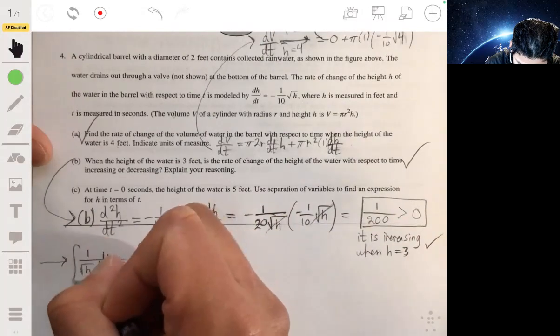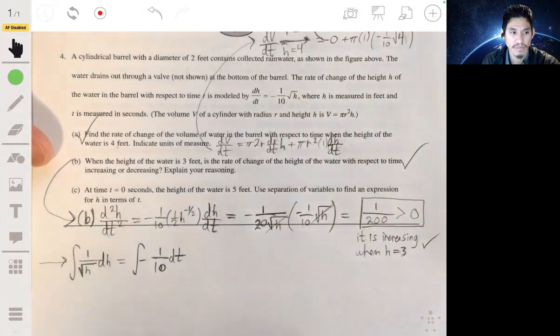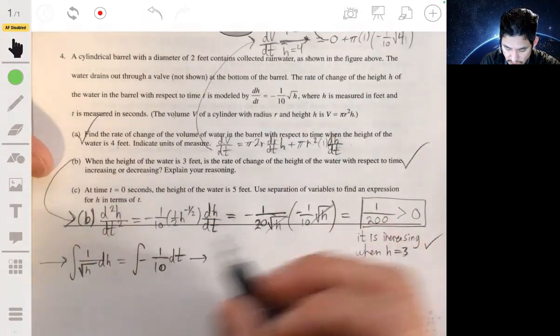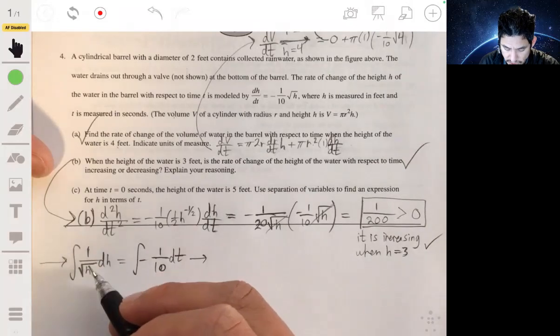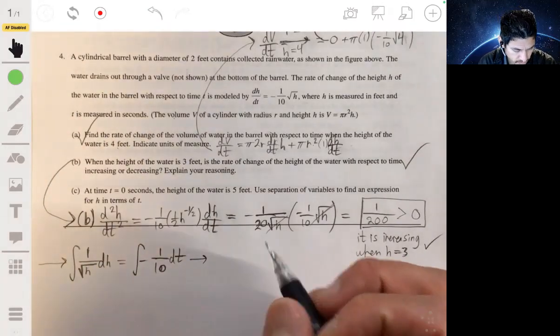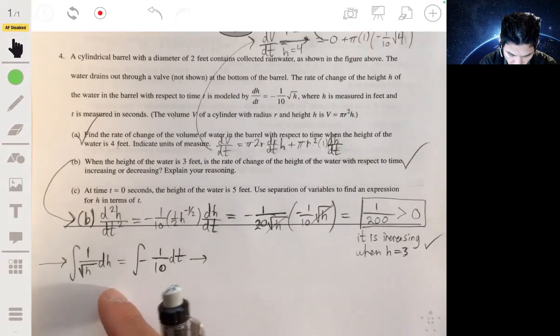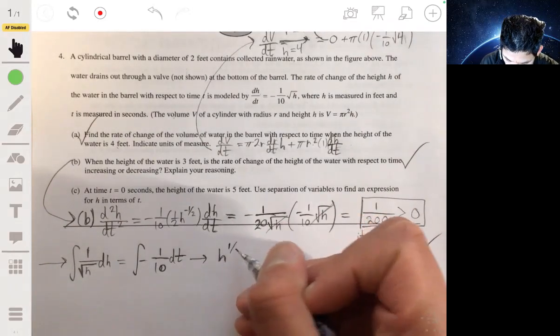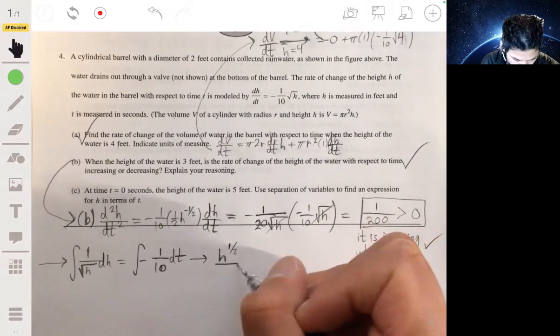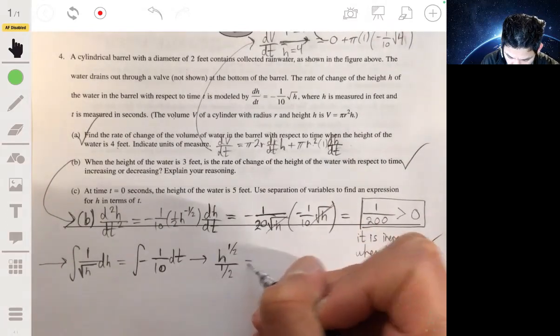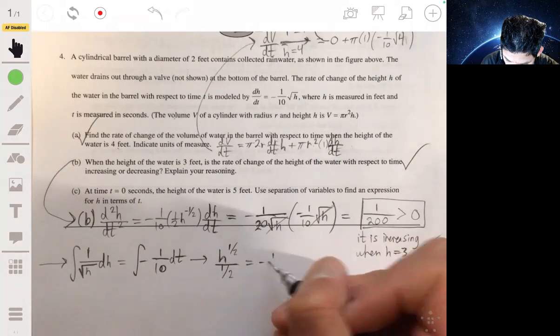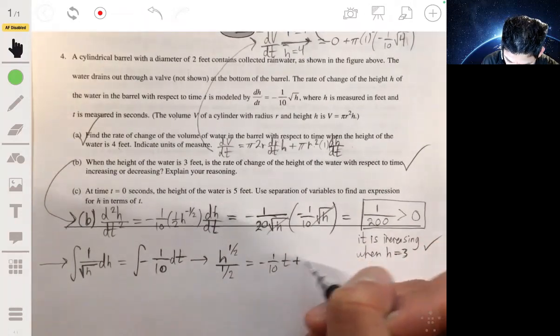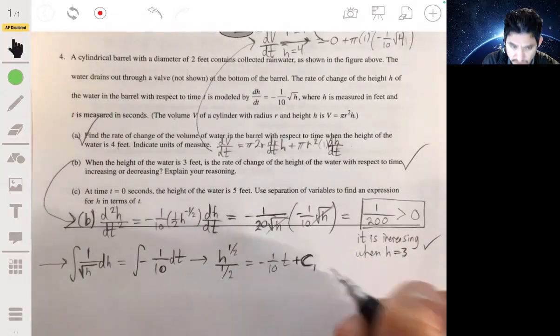You'll get one over the square root of h times dh is equal to negative one-tenth times dt. And from here, you set each side, you integrate each side. So you set up an integral, and then we integrate. This is just using a reverse power rule. We're going backwards. So adding one-half to the power. So h to the one-half divided by one-half is equal to negative one-tenth t plus our constant. I like to call it c1 in case we have to find others.